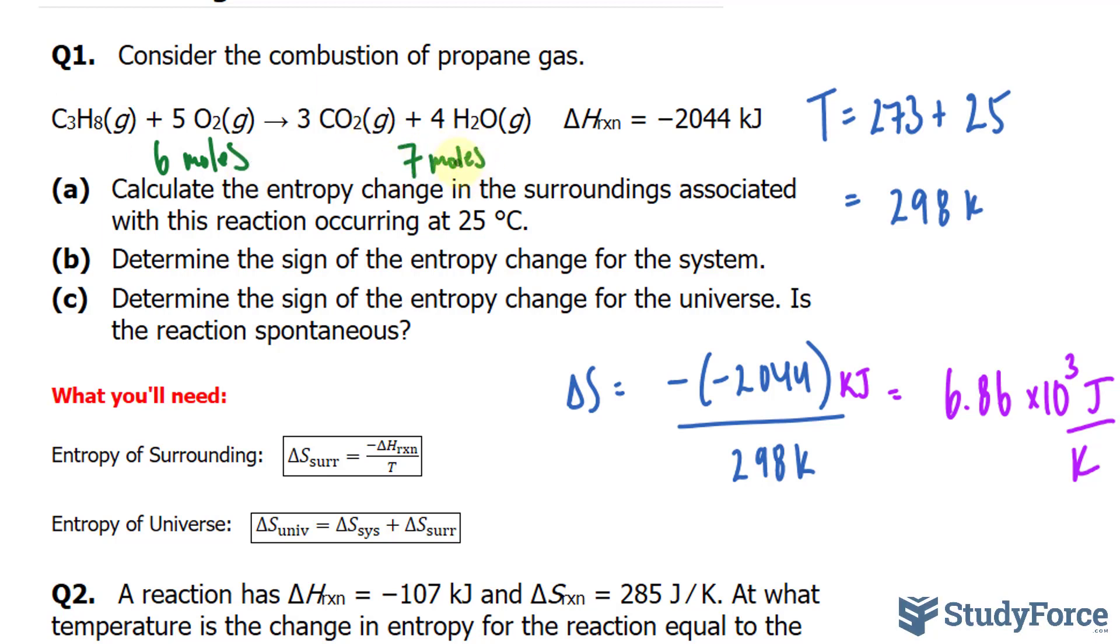So, if you think about it, it's becoming more disorderly as we go from reactants to products. And when disorder increases, in other words, entropy increases, then we would expect a positive entropy. So, a positive delta S.